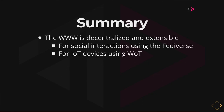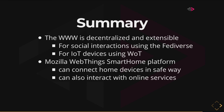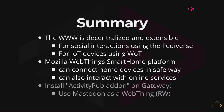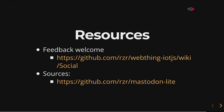To sum up: the web is decentralized and extensible for social interaction through the Fediverse. And we can also target IoT devices using Web of Things technology. The Mozilla WebThings smart home platform can connect all devices in a safe way. You can also interact with online services through this ActivityPub add-on. You can use Mastodon as a sensor and actuator as a web thing — that's very easy. I hope you can try it and if you get some issues, feel free to reach out.